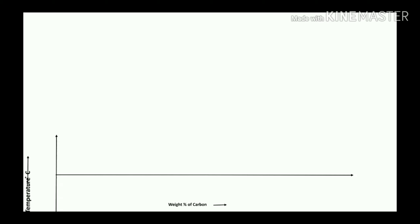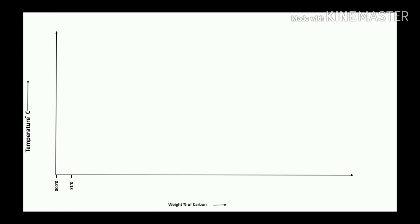The x-axis represents weight percentage of carbon. Some important points you have to remember: 0.008% carbon, 0.18% carbon, 0.8% carbon, 1%, 2%, and importantly 4.3%, and finally 6.67% carbon on the x-axis.